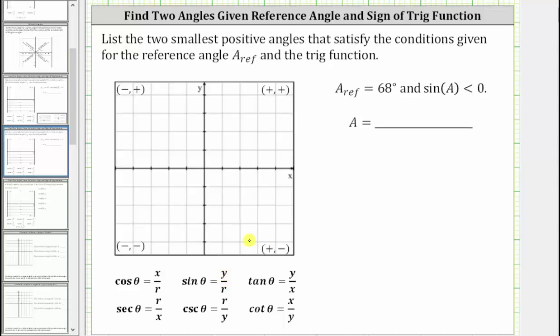And therefore, the terminal side of angle A must be in either quadrant three, where y is negative, or in quadrant four, where y is also negative.